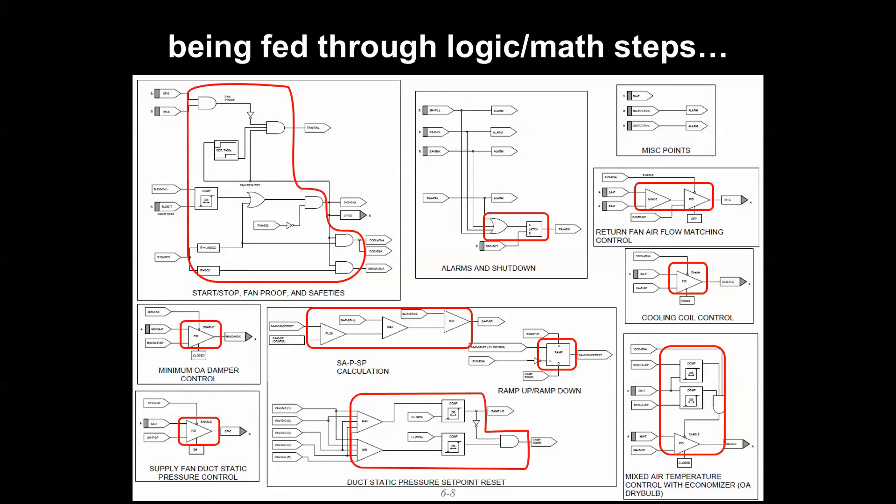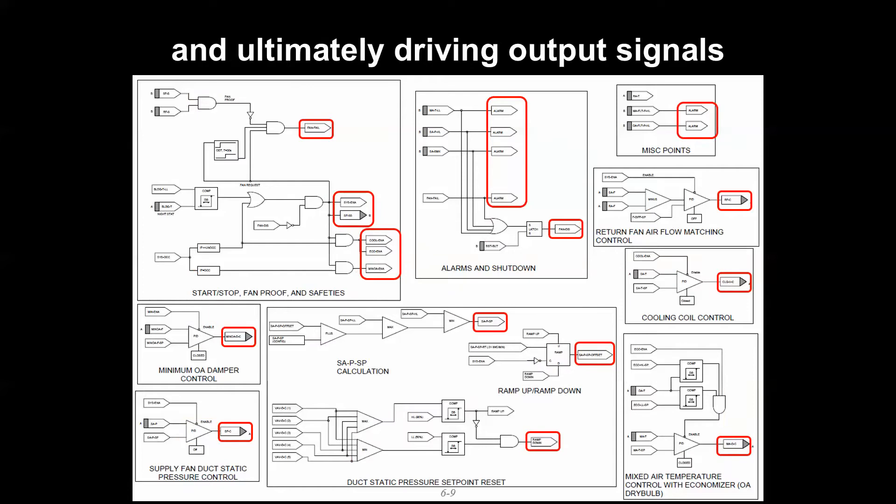On the right side we have some set of output signals that are either leaving this control loop and going to a piece of equipment like a coil valve, or going to a different control loop or somewhere else in our control system.